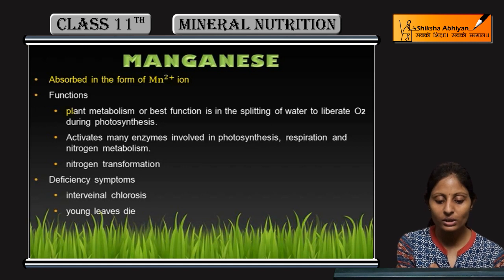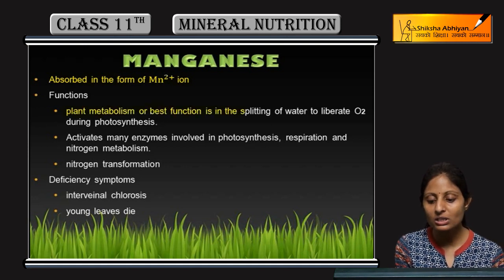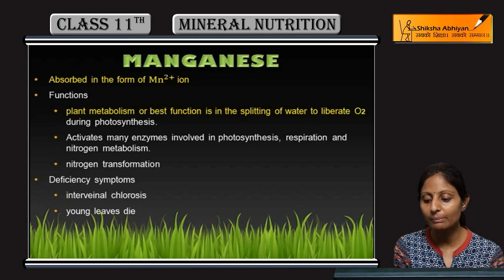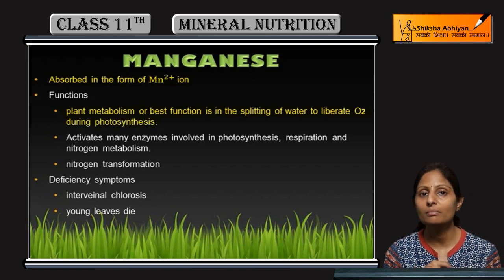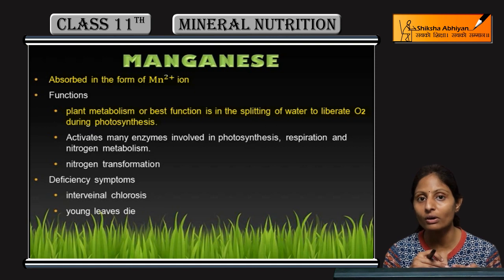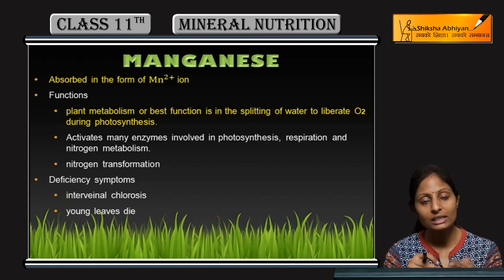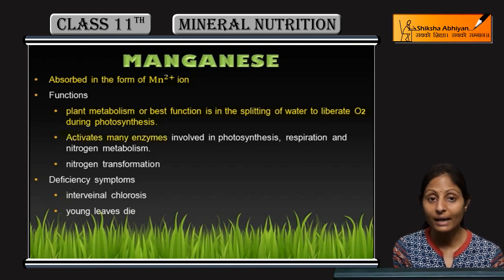Plant ke andar kaun kaun si functions carry out kerta hai? Plant metabolism mein best function is the splitting of water to liberate oxygen during photosynthesis. Jab humne non-cyclic or cyclic photosynthesis pathways padhe hain, wahan par splitting of water jo hoti hai, that is mainly because of the involvement of manganese.